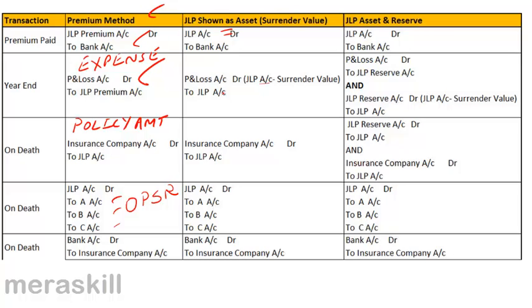On maturity or death, we receive the full policy amount. So: insurance company account debit to joint life policy account. Since the JLP had a surrender value balance, and now the full maturity value has come in, the difference is transferred to partners A, B, and C's accounts in the old profit sharing ratio. On receipt of money: bank account debit to insurance company.